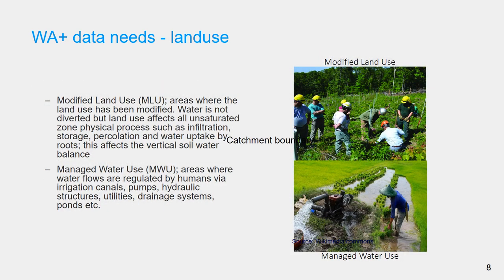Modified land uses refer to land that is significantly modified by human activity for the sake of production. Water diversions and withdrawals do not take place in the modified land use group, but by modifying vegetation density, hydrological processes such as evapotranspiration, drainage, percolation, and recharge are affected. Changes in evapotranspiration in the modified land use class can have significant impact on groundwater levels, stream flows, and downstream water availability. Rainfed cropping systems, deforestation, and plantation forests typically fall in the modified land use class.